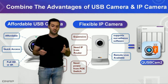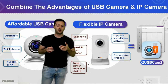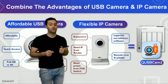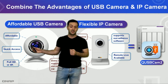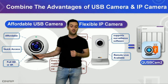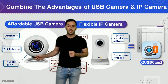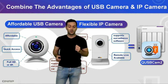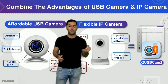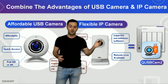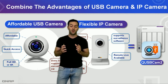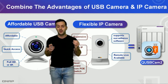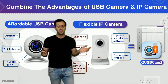QSBCAM2 takes the advantage of both worlds: the affordable USB cameras with quick access and really good quality from full HD to 4K, and also the flexibility of IP cameras, as it supports surveillance software and remote live availability. These two can be combined and used by the QNAP NAS using QSBCAM2.